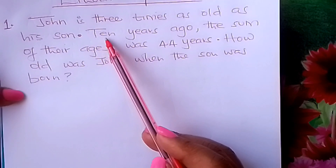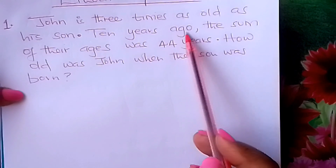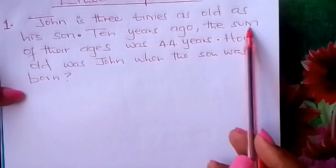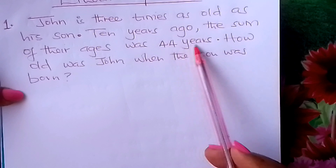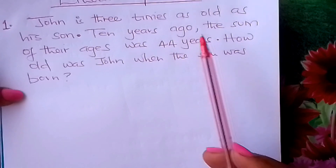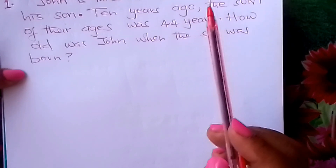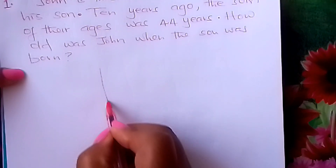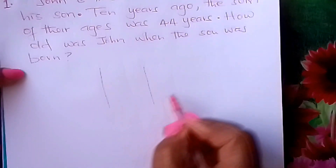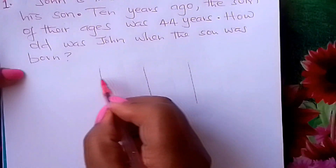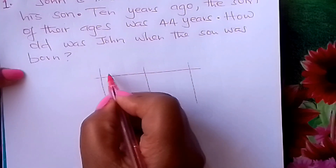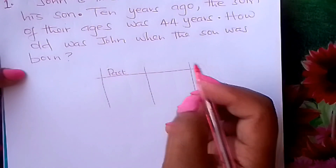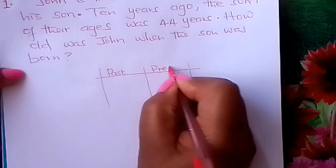Then the second sentence says 'ten years ago' — this is to do with the past tense. To handle this question, you can draw two columns: one for the past tense and one for today, the present. You have the ages in the past tense on one side and today's ages on the other.